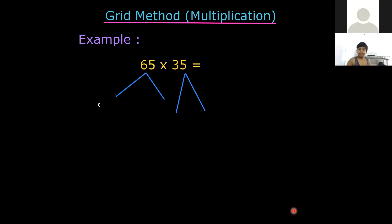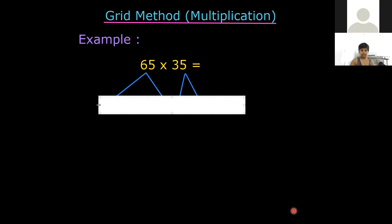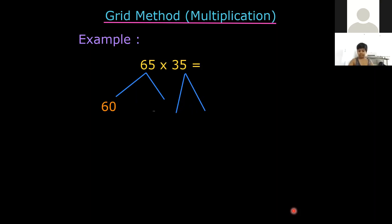Sujan, done? Yeah, okay. 60. Am I right? What am I supposed to write here? 30? 5? All right. Change color. Okay. 30 and then 5.